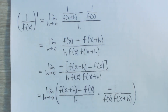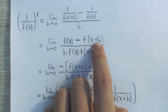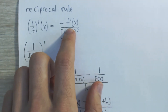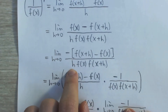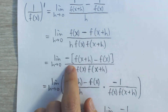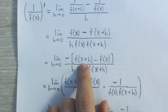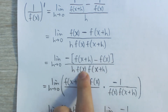In the numerator we have f of x minus f of x plus h. Notice that's the opposite of the numerator of the derivative of f — the derivative of f is f of x plus h minus f of x, the other way around. And remember, in our final answer we want to end up with the derivative of f. We also have h in the denominator, so if we factor out a negative sign and flip the order, we get f of x plus h minus f of x all over h — that's the derivative of f.